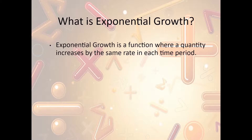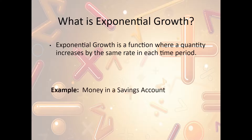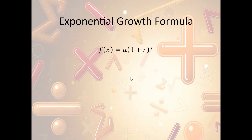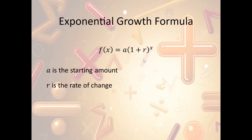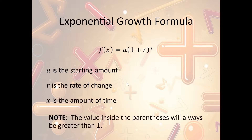What is exponential growth? Exponential growth is a function where a quantity increases by the same rate in each time period. An example is money in a savings account — you put money in, it increases with interest and goes up exponentially. The exponential growth formula is f(x) = a · (1 + r)ˣ, where a is the starting amount, r is the rate of change — such as the interest rate — and x is the amount of time. Notice the value inside the parentheses will always be greater than 1 with exponential growth, because we're adding 1 plus some positive number.